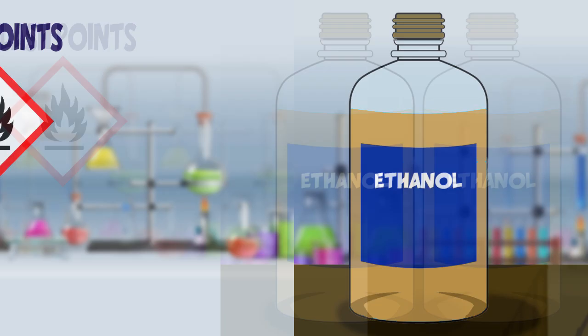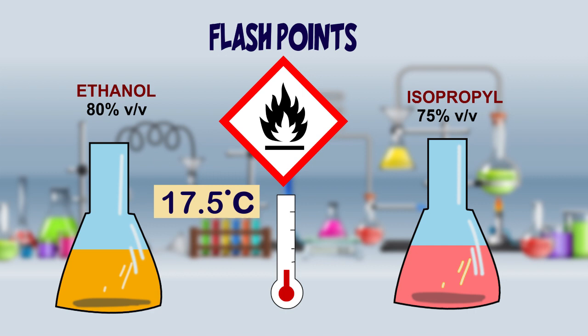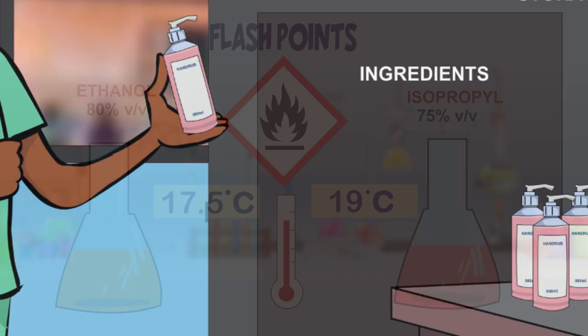The flash point of ethanol 80% volume by volume and of isopropyl alcohol 75% volume by volume is 17.5 degrees Celsius and 19 degrees Celsius respectively. National safety guidelines and local legal requirements must be adhered to for the storage of ingredients and the final product.